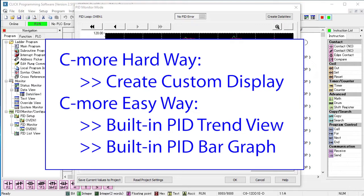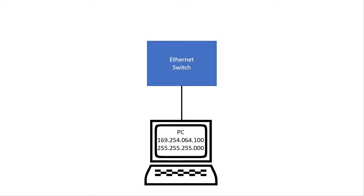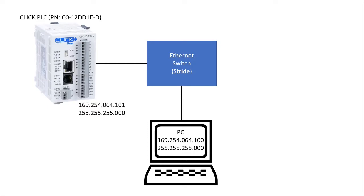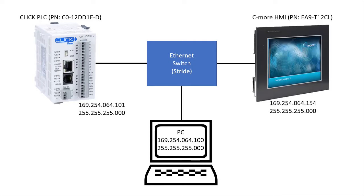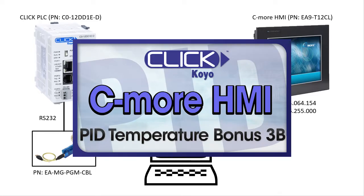Before we see how to do that, we need to get our system set up. I have a computer at this network address connected to an Ethernet switch. You can use any Ethernet switch you want — this one happens to be one of the AutomationDirect Industrial Stride switches. I have the Qlik PLC at this Ethernet address connected to the switch via port 1, and this C-more HMI at this network address also connected to the switch. I also have a USB to serial adapter here so I can set up the Qlik PLC's IP address before the network is ready. This video assumes you know how to set up all the IP addressing and just want to learn about the C-more HMI's PID templates. But if you need a refresher on how to set up the networking, check out part B where we show you step by step how to do that.